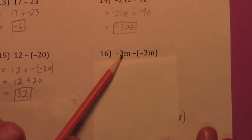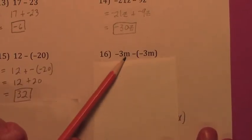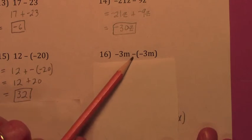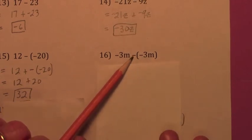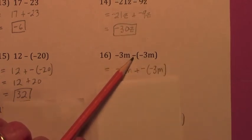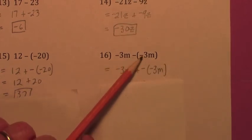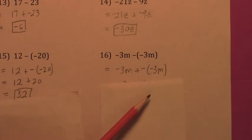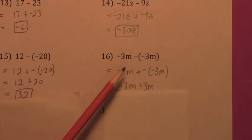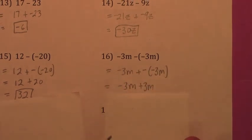Same thing here. This is negative 3m minus negative 3m. This minus sign becomes plus and negative, but this stays negative 3m — it doesn't change. Get rid of the double negative, and your answer is zero.